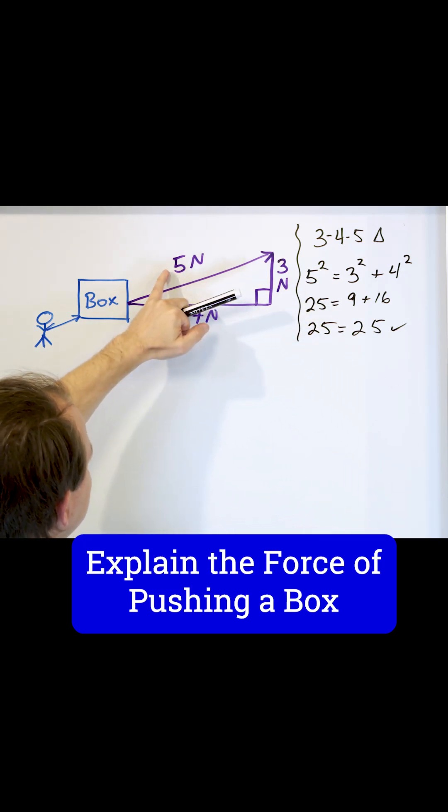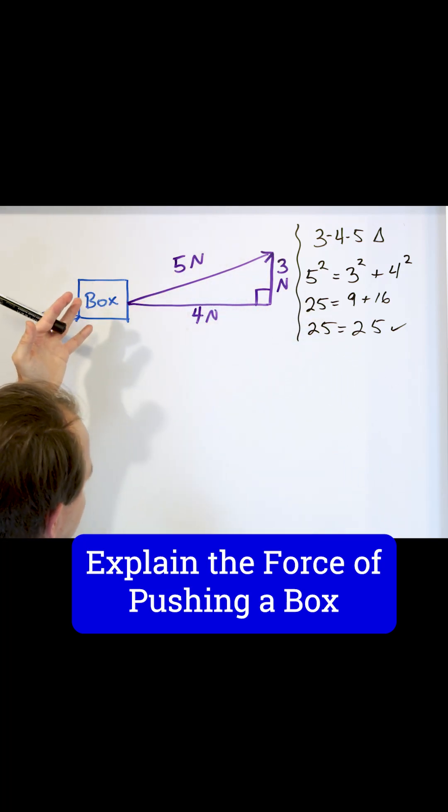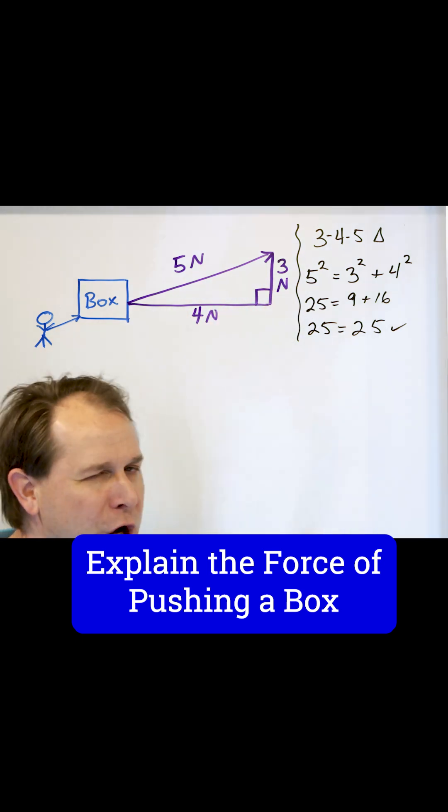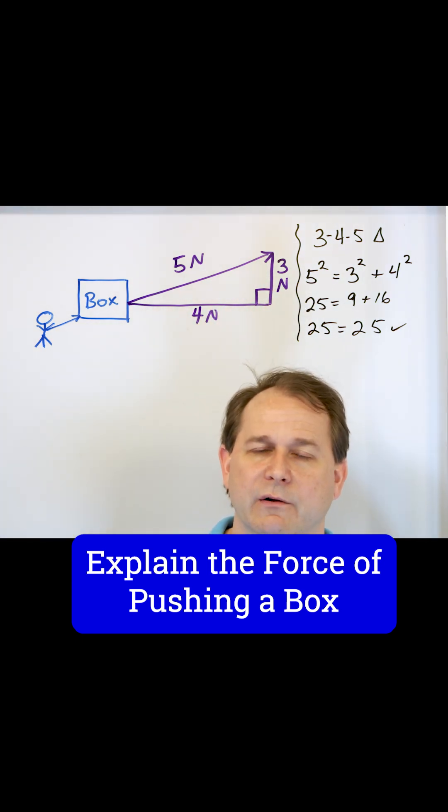So if I know this is a right triangle, and I know the hypotenuse is 5 newtons, that's why I chose 5 newtons, then I automatically know from geometry the other two sides of the triangle.